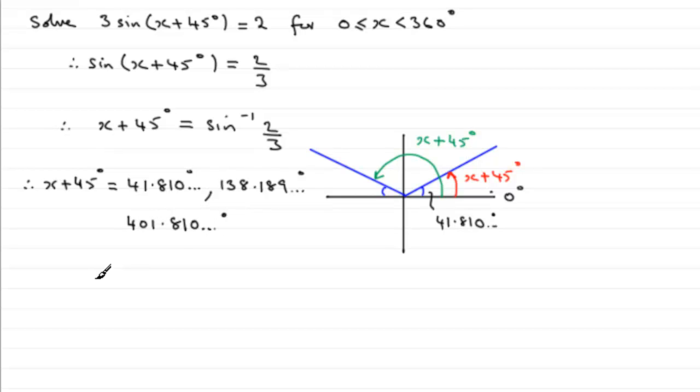And so what we need to do now to get x is just take 45 degrees away from each one of these three values. If we take 45 away from 41.810 we get a negative number, -3.19 and so on degrees. So I'm going to put that in brackets because it's out of range. We wanted between 0 and 360.